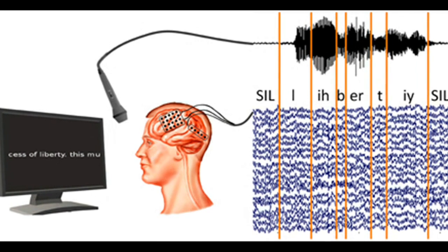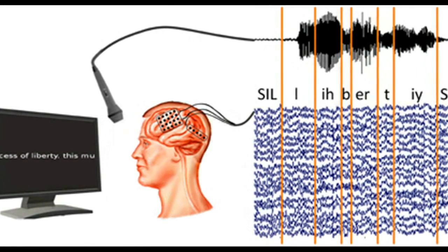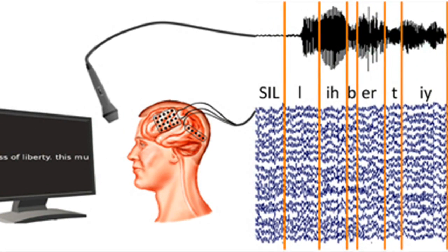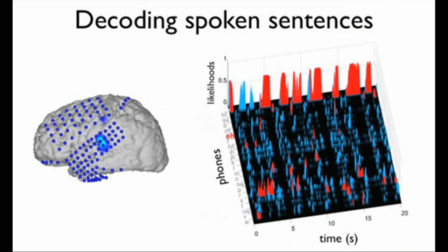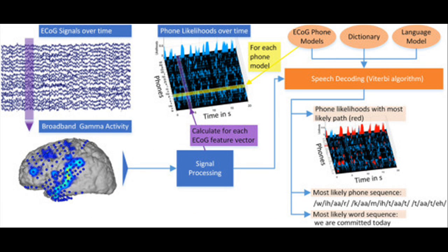Researchers have just demonstrated for the first time that it is possible to turn a person's thoughts into a legible phrase using what they are calling a brain-to-text interface.